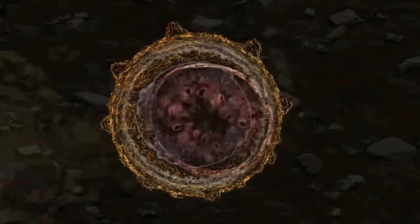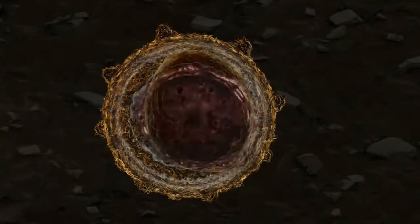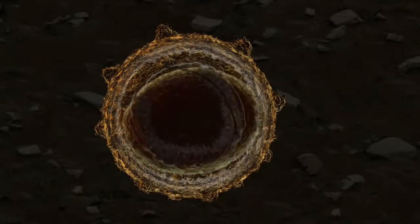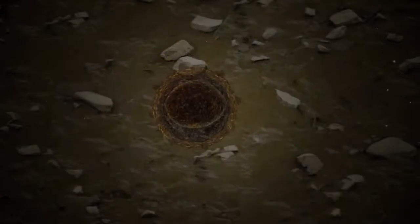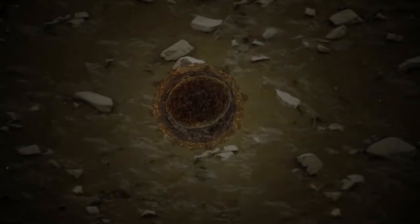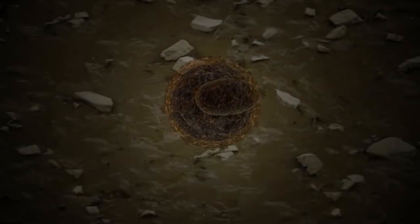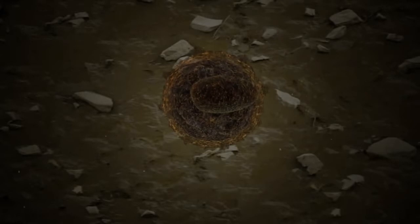The resting spore undergoes cell division and changes from a hardened survival structure into a fragile, short-lived zoospore, which has two hair-like flagella that it uses to swim towards a root hair.